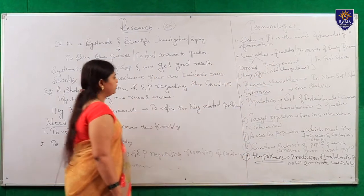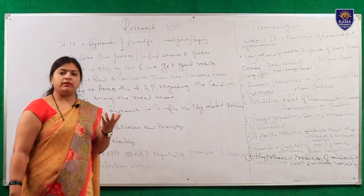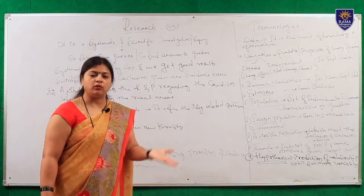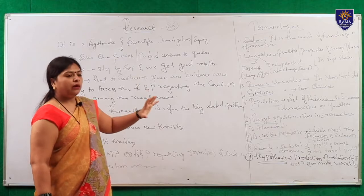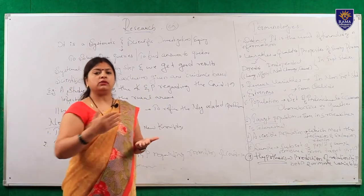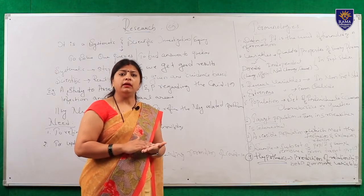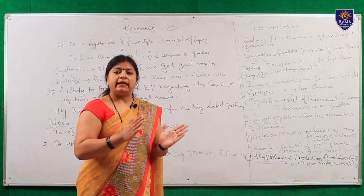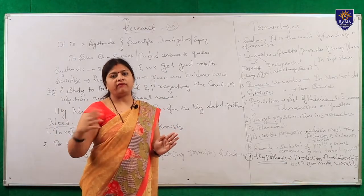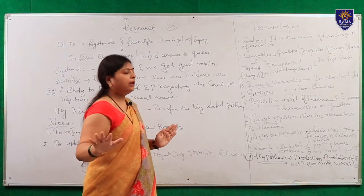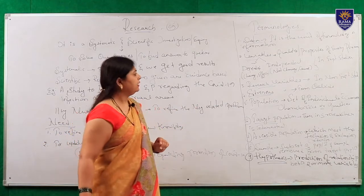The dependent variable might be an education, a structured teaching program, a video-assisted teaching program, or a planned teaching program - whatever. Because of that, what happens? Whenever you teach students - now I am teaching you - you might be gaining some knowledge. That is what: the teaching is changing your knowledge and it is affecting you. The knowledge is an independent variable and my teaching is a dependent variable, by which you are getting affected.